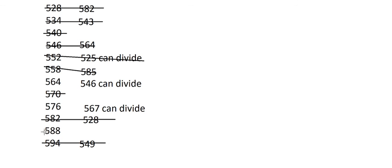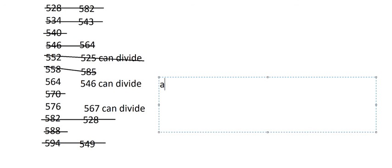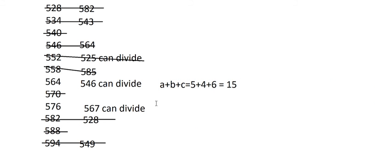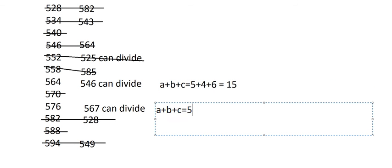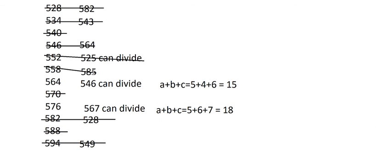588 can divide both numbers but we need to reject it. Now we are left with only 546 and 567 as true solutions. For 546: 5 plus 4 plus 6 equals 15. For 567: 5 plus 6 plus 7 equals 18. But we need to check that 546 actually divides — it does not, so we reject it. The final answer is 567.